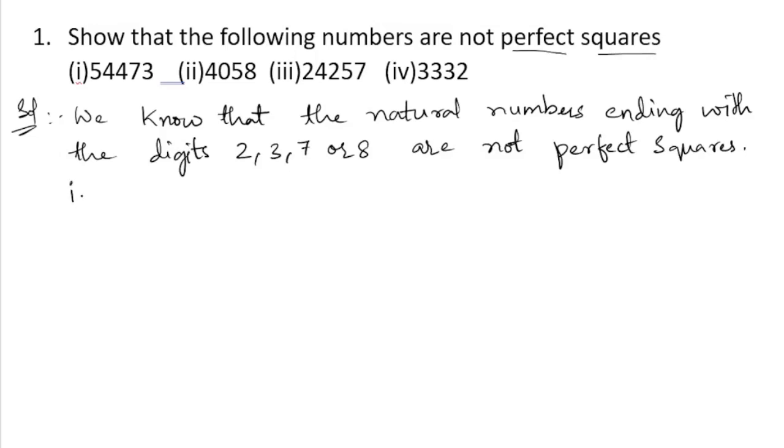So in the first bit there is 54473. What is the units digit? It is 3. So this number is ending with the digit 3, so it is not a perfect square.